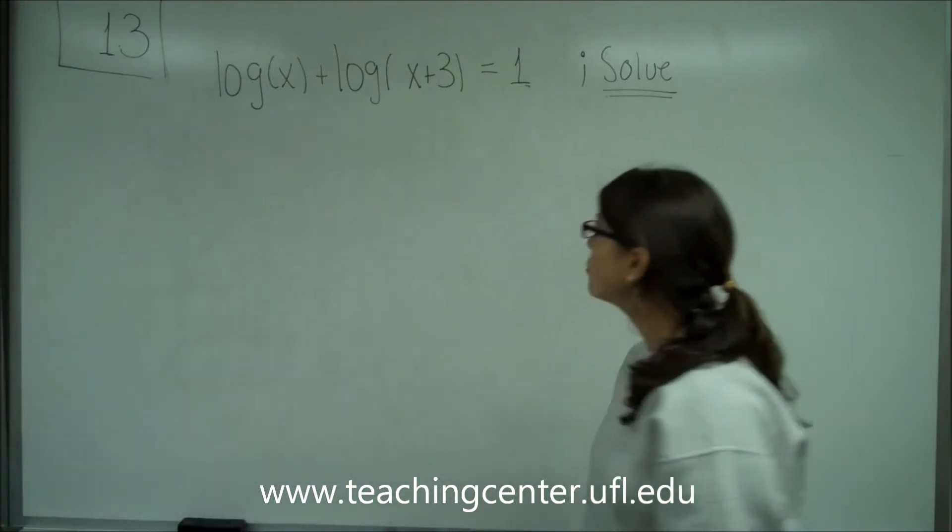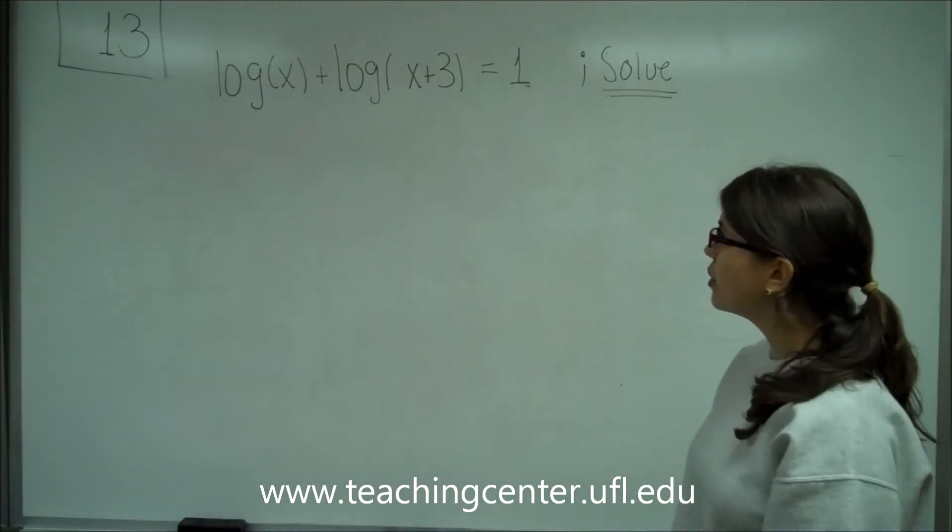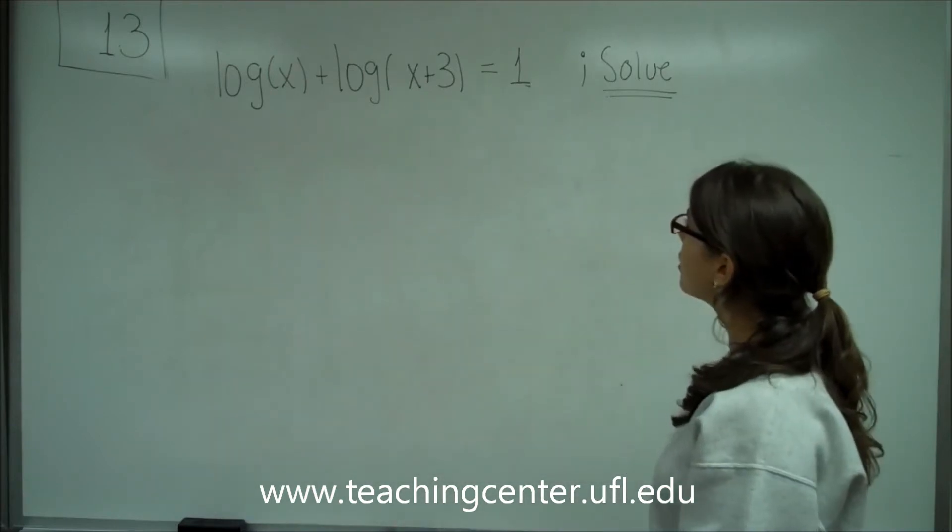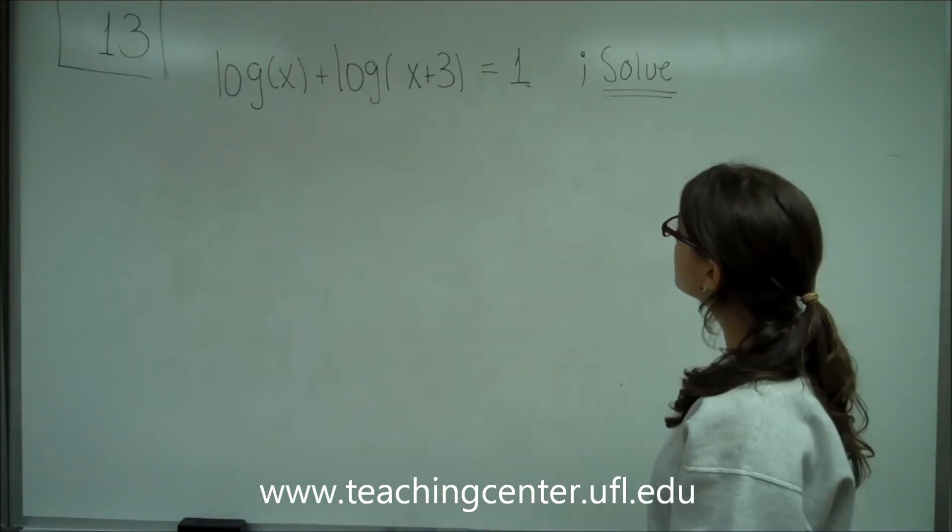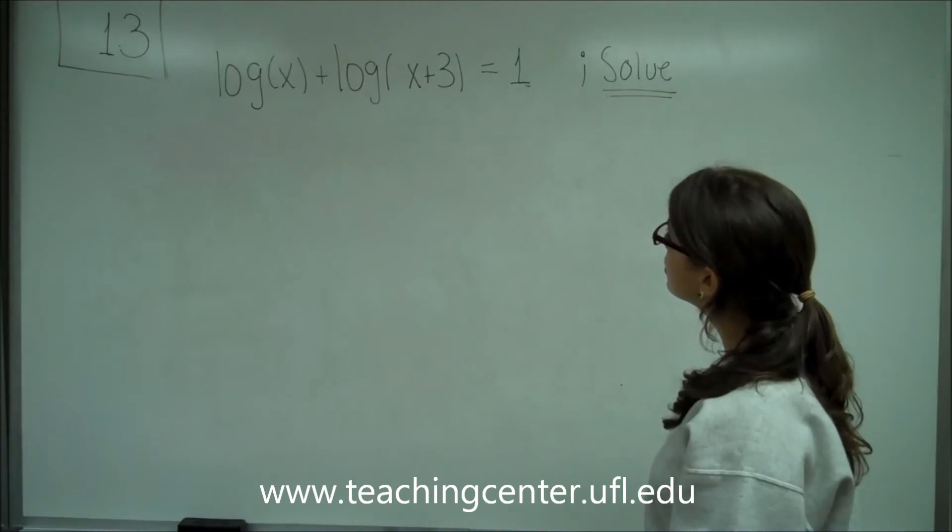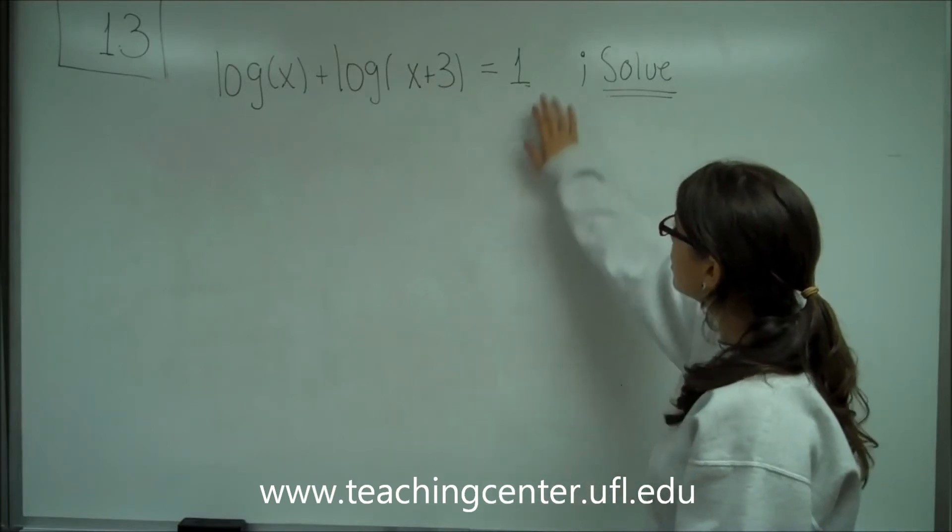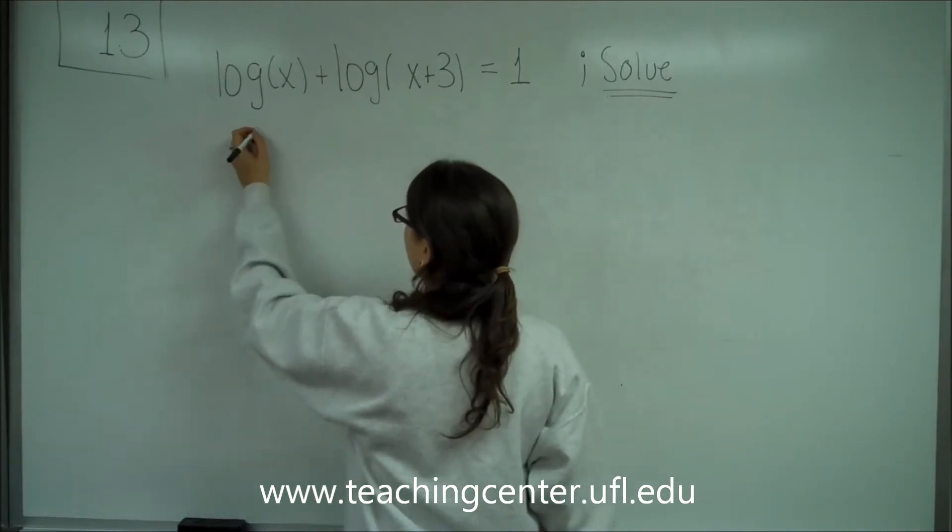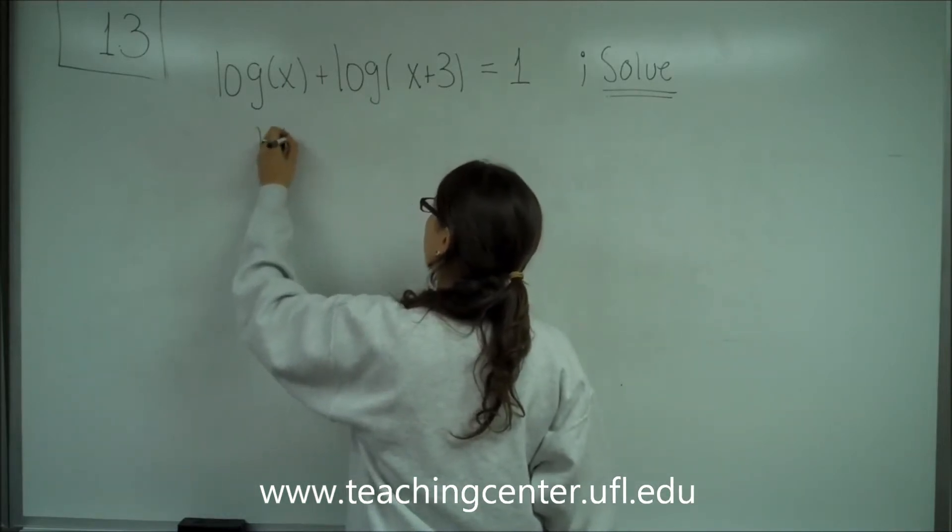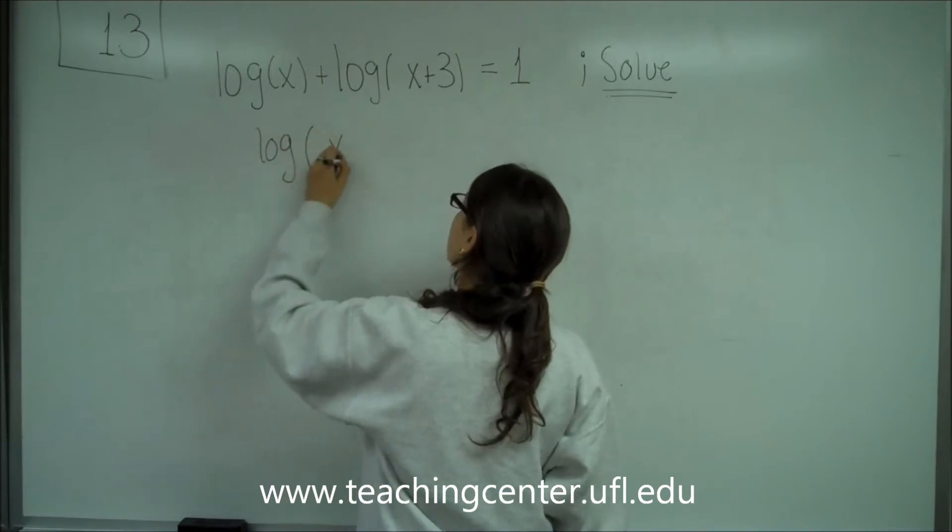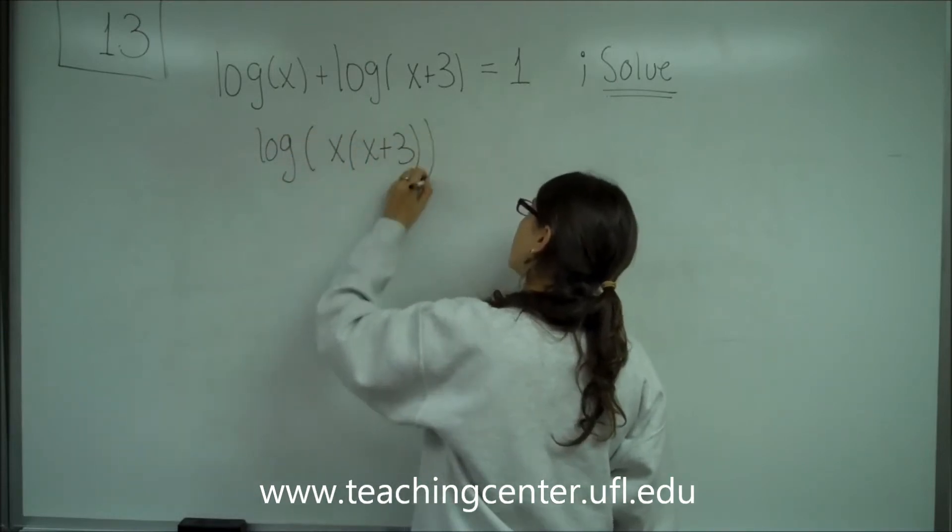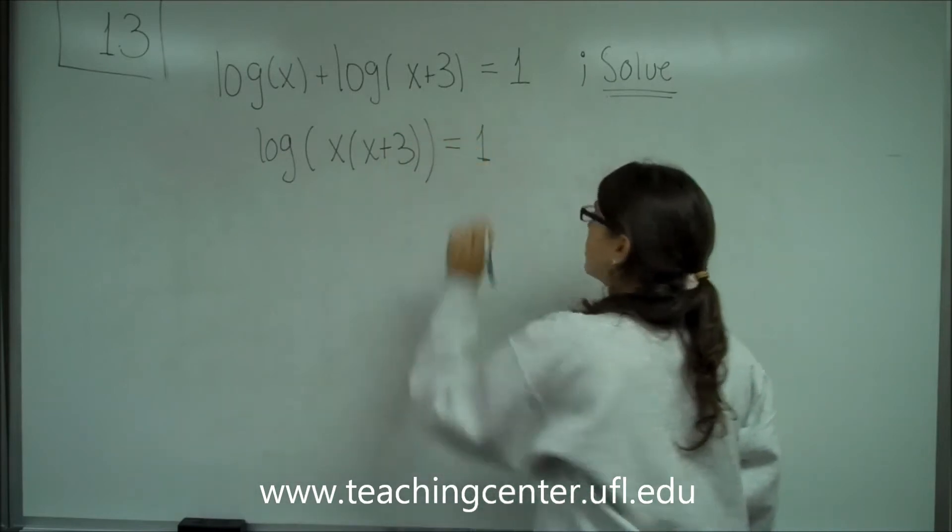So to solve for x here, we have to first put these two logs together in some way. So first of all, let's put these two together. So we have log(x(x+3)) = 1.